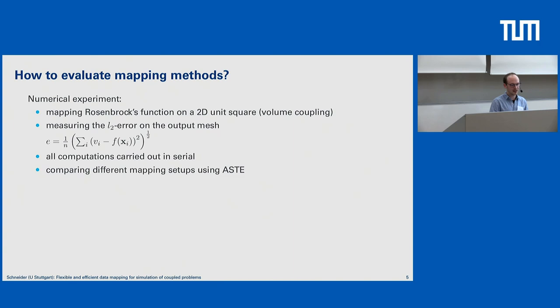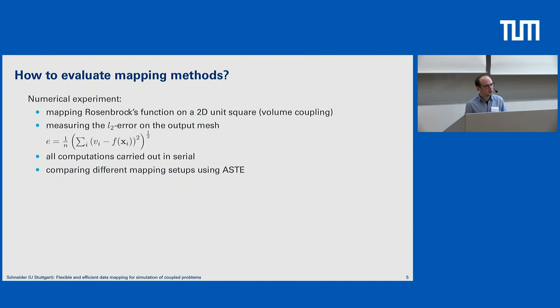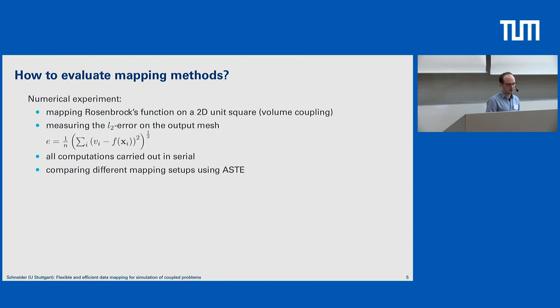In order to give you a feeling on how to select a mapping method and what criteria to consider, I performed a small numerical experiment. I took a unit square domain with two different representations and some sample data — in this case Rosenbrock's function — which is a well-known function for evaluating mapping methods. I map from my input mesh to my output mesh, and since I use an analytic function, I can immediately determine the error on our output mesh. All computations are carried out in serial, and I created these measurements using Aste — you will work with Aste if you attend the mapping course on Thursday.